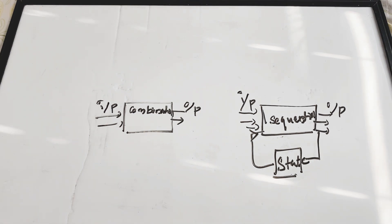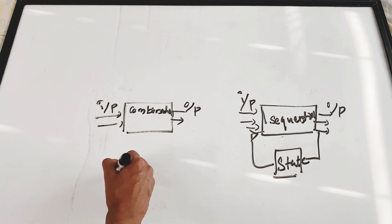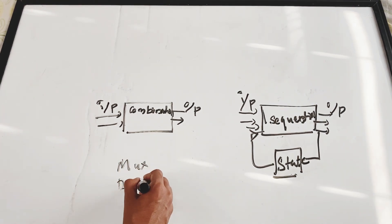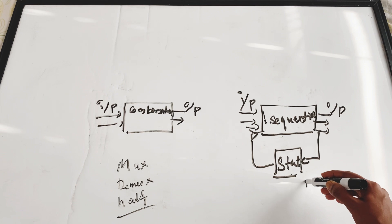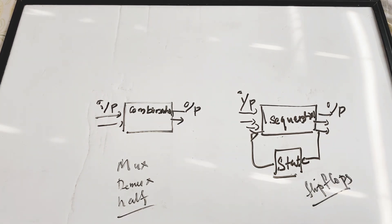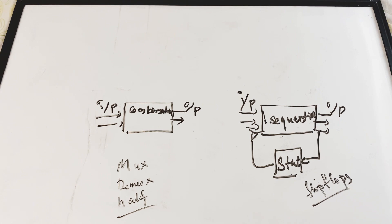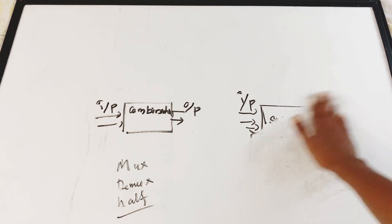Examples of combinational circuits include MUX, DMUX, and half adder. Flip-flops are examples of sequential circuits because the output depends on memory or state as well. Both combinational and sequential come under digital circuits, so the correct answer is option C - both combinational and sequential.